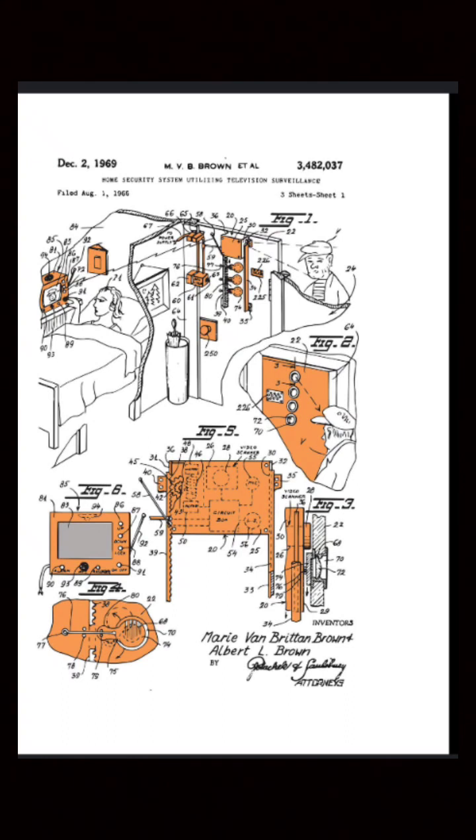Marie and Albert Brown filed for a patent on August 1, 1966, under the title Home Security System Utilizing Television Surveillance. Their application was approved on December 2, 1969.